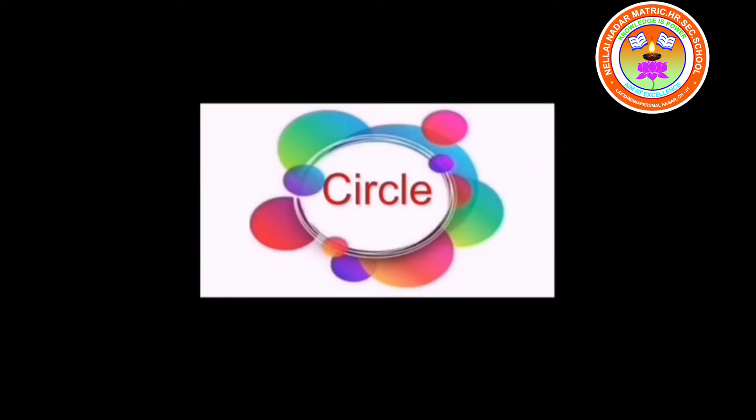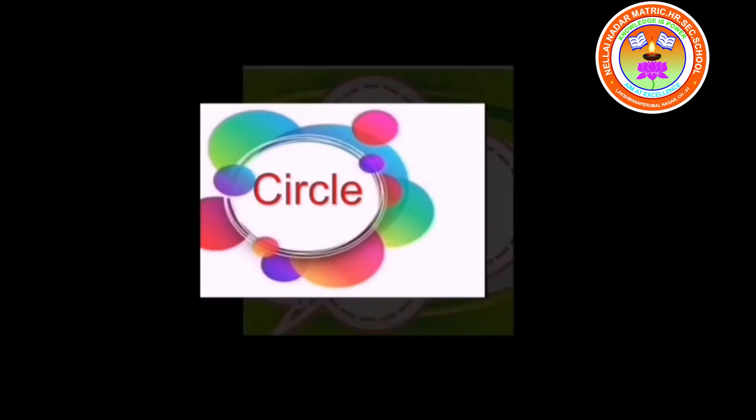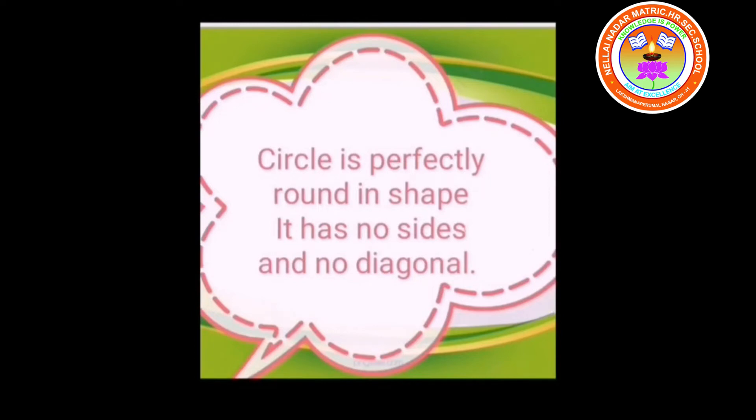A circle is a round, two-dimensional shape. All points on the edge of the circle are at the same distance from the center. Circle is perfectly round in shape. It has no sides and no diagonal.